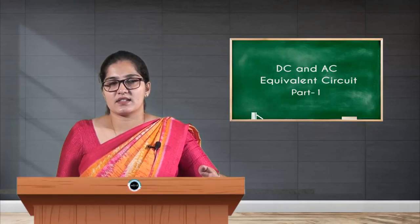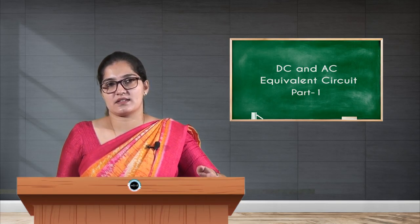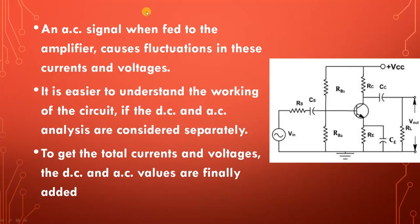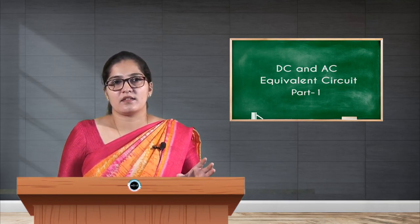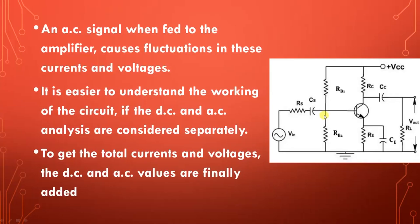Consequently, DC voltages and currents are set up in the circuit. An AC signal, when fed to the amplifier, causes fluctuations in these currents and voltages. When the circuit is switched on, the DC supply is already present to run the transistor. It is easier to understand the working of the circuit if DC and AC analysis are considered separately.